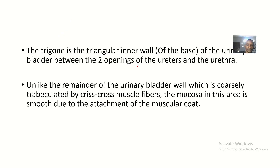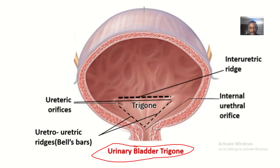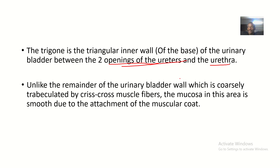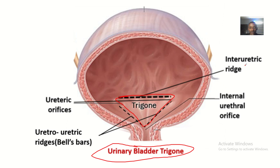Let's have a view of the trigone before we proceed. This triangular area here is what we call the trigone of the bladder. The trigone is a triangular inner wall of the urinary bladder between the openings of the urethra and the ureter. The ureter has two openings in the bladder, and when you join them they form the base of the trigone, while the opening of the urethra forms the apex of the trigone.